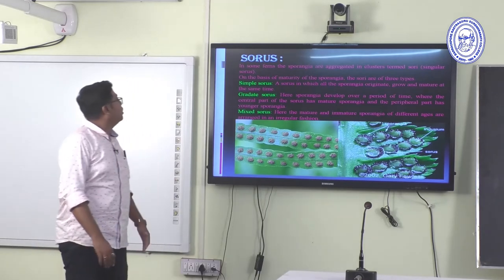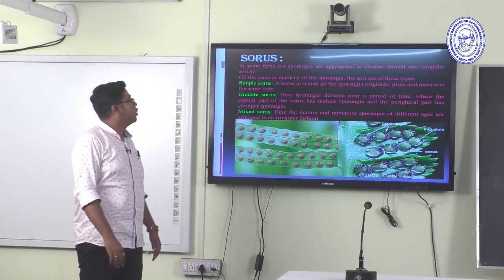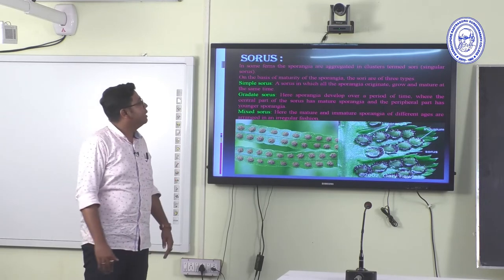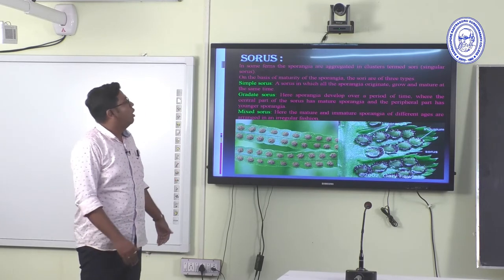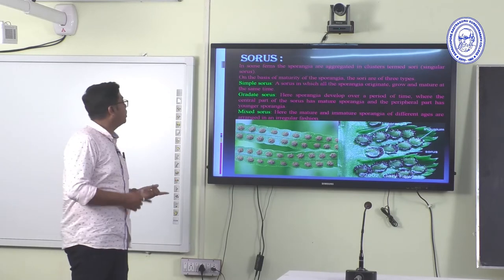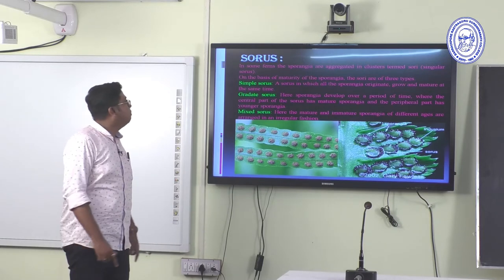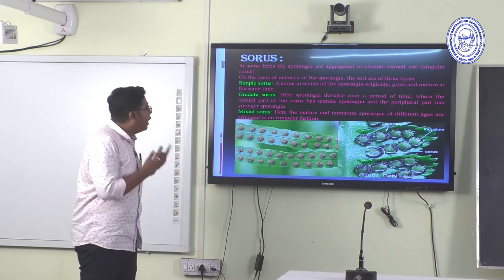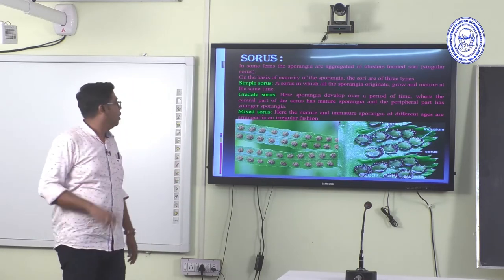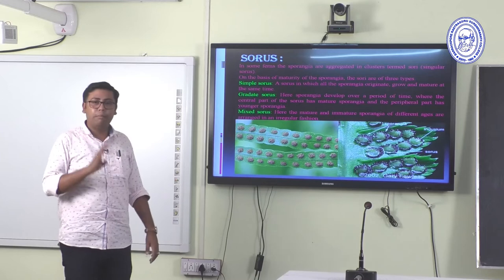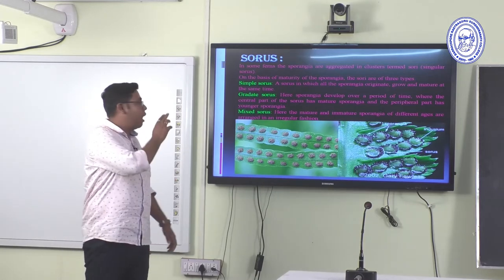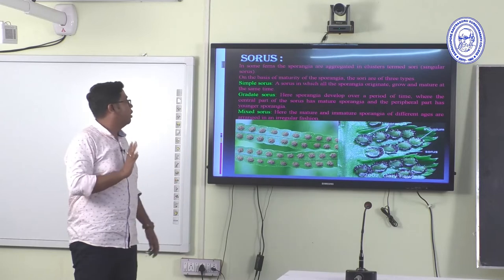Regarding the type of sorus: sporangia are aggregated in clusters called sori (singular: sorus). On the basis of maturity of the sporangia, the sorus is of three types: simple sorus, graded sorus, and mixed sorus.